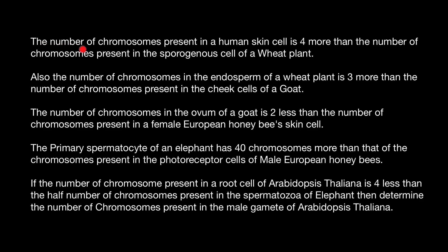Here's the first statement: the number of chromosomes present in a human skin cell is four more than the number of chromosomes present in the sporangerous cell of a wheat plant. Humans have 23 pairs of chromosomes, so the total is 46 chromosomes. The human skin cell is diploid. The sporangerous cell of wheat is also diploid — it just gives rise to haploid spores. So the diploid chromosome number in wheat is 46 minus 4, which equals 42.